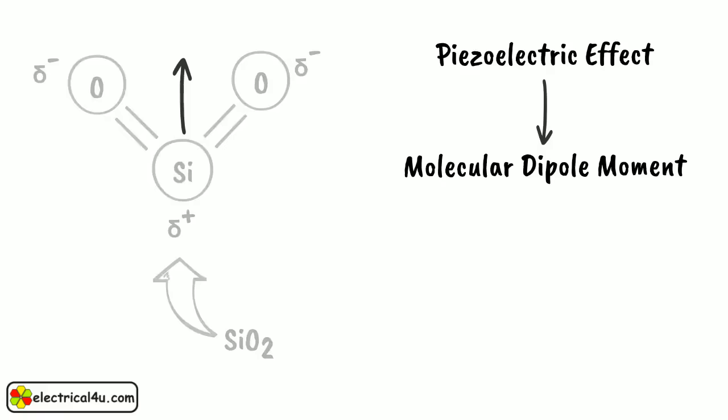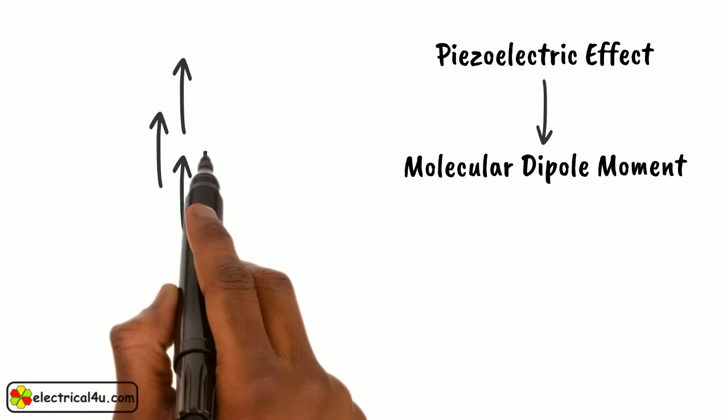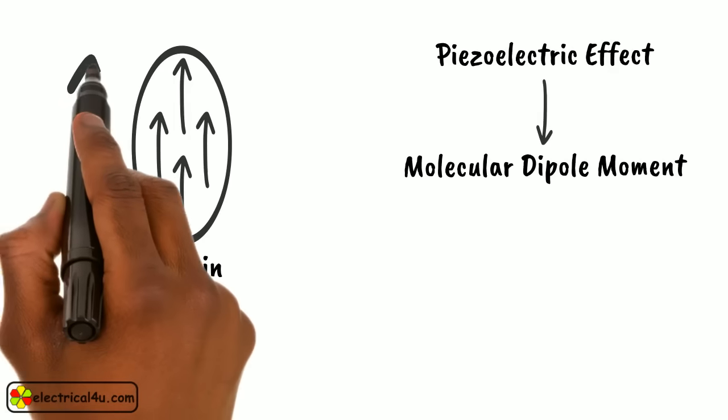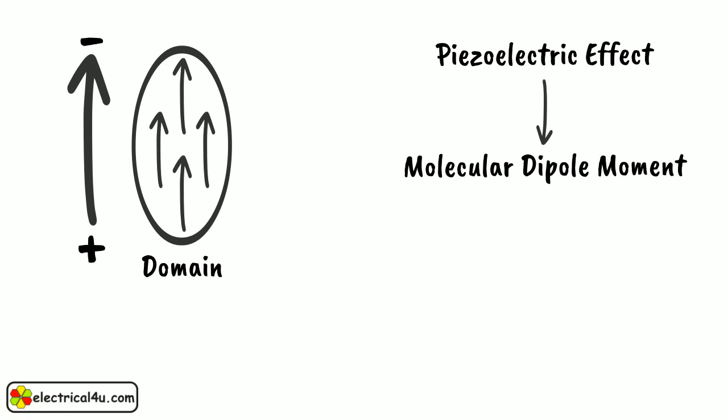These dipoles tend to have the same direction when next to each other, and they all together form regions referred to as domains. As most of the dipoles are oriented in same direction in a domain, each domain will have a resultant dipolar characteristic.